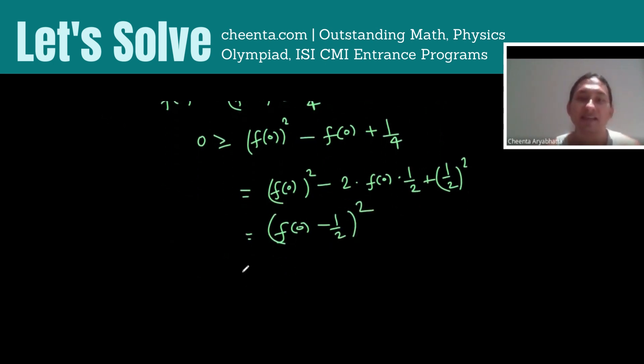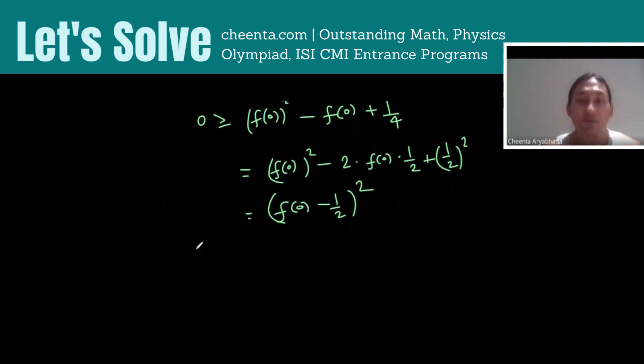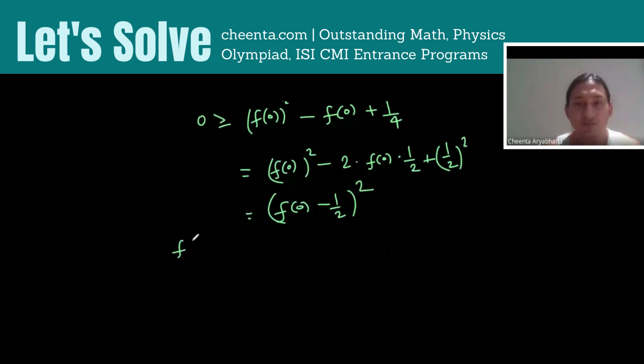So we have a square which is less than or equal to zero. As it cannot be less than zero, it has to be equal to zero, which would imply f(0) = 1/2.